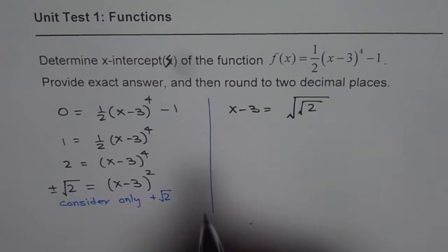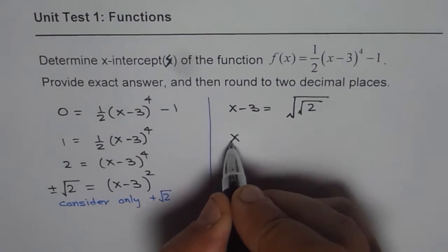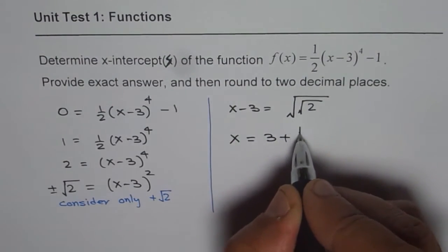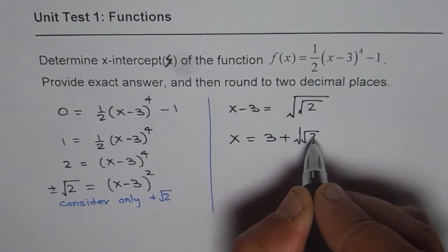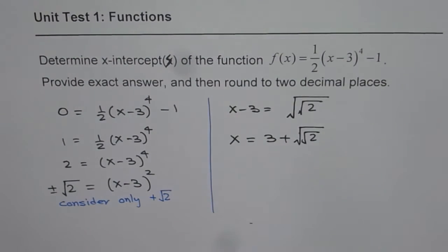Since the negative square root cannot be square rooted further. So that is what you get. And from here we can say x equals 3 plus square root of square root of 2. So that is the exact value.